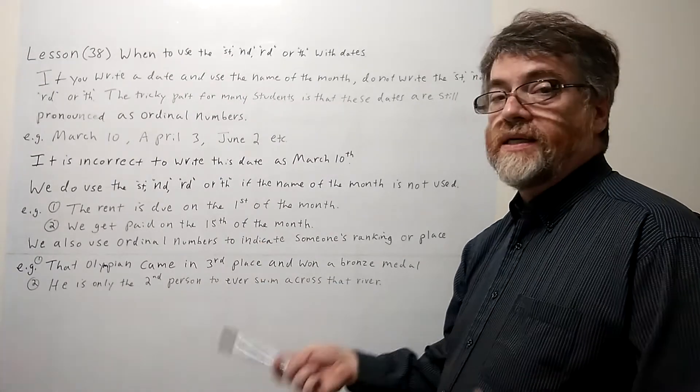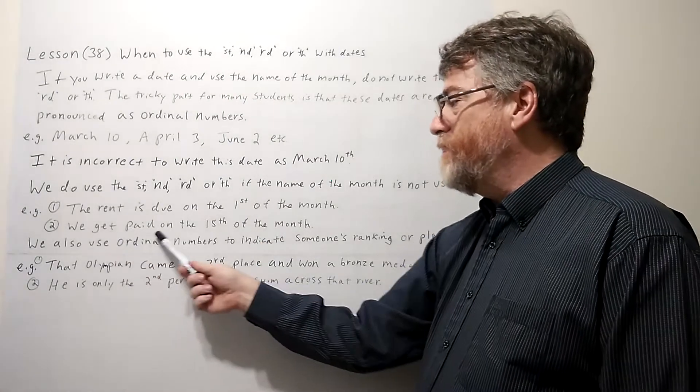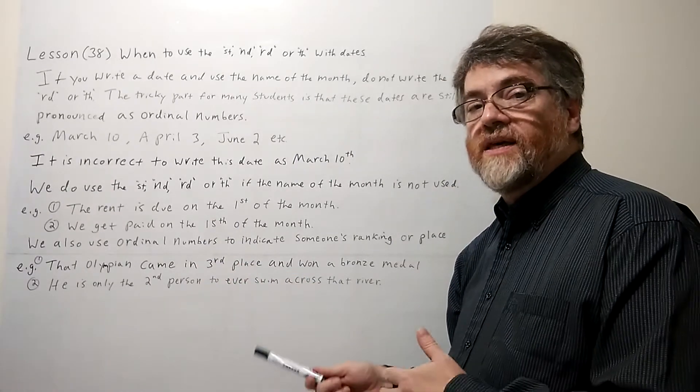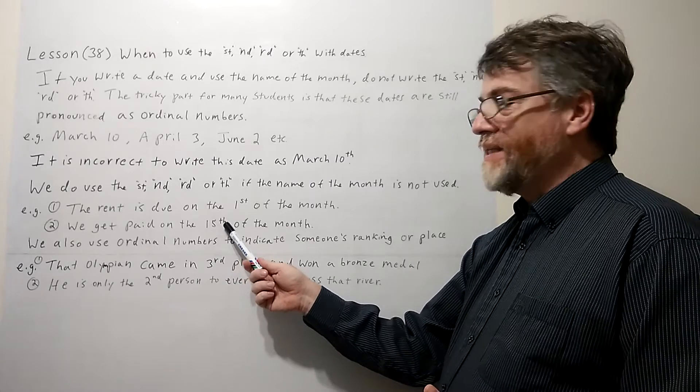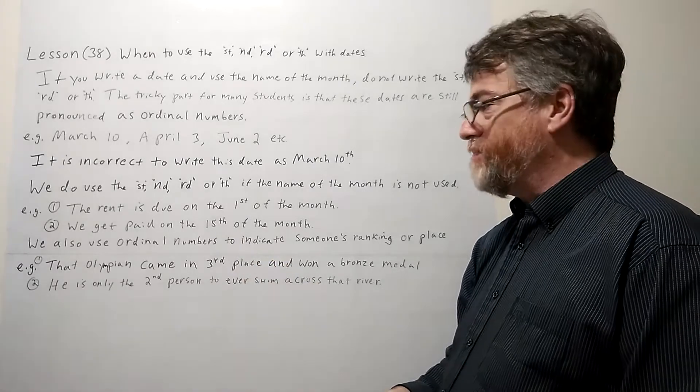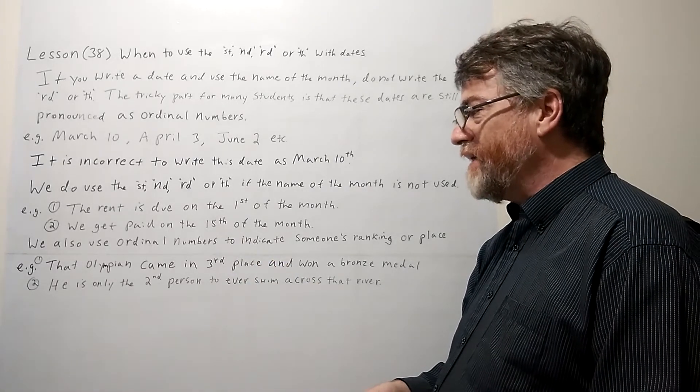Okay, let's look at example two. We get paid on the 15th of the month. Again, this way it lets you know it's a date. If you didn't have a TH, it would be we get paid on the 15 of the month.